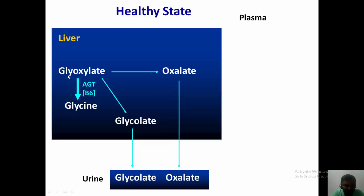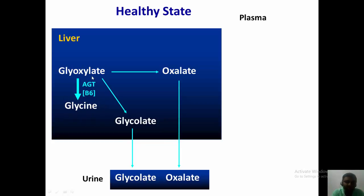Normally, glyoxylate formed by different metabolic pathways is converted to glycine with the help of AGXT. Some amount is converted to glycolate and some to oxalate, and these glycolate and oxalate are excreted in the urine. Most of the glyoxylate is converted to glycine in the peroxisome of the liver with the help of AGXT.